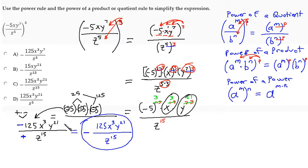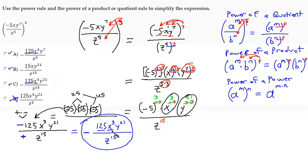Looking at multiple choice options: the negative sign eliminates option d. We have 125, so option a has 125 and the negative sign. Between a and c, both have x to the third. The distinguishing factor is y to the twenty-first — only option c has y to the twenty-first. Verifying one more time: c has z to the fifteenth in the denominator. C has all the critical components and is the correct response.